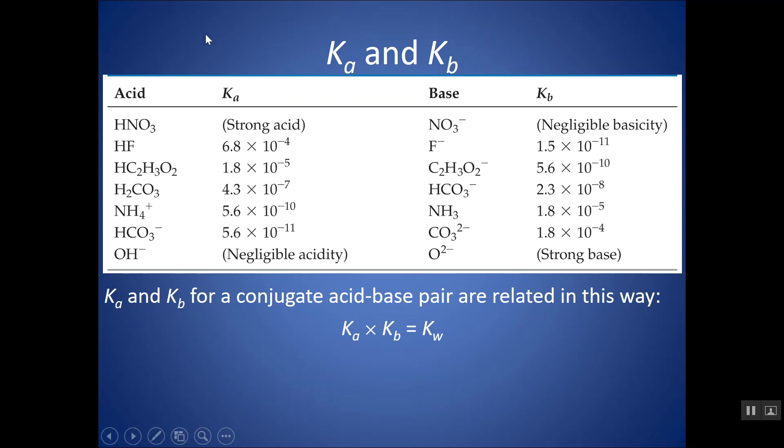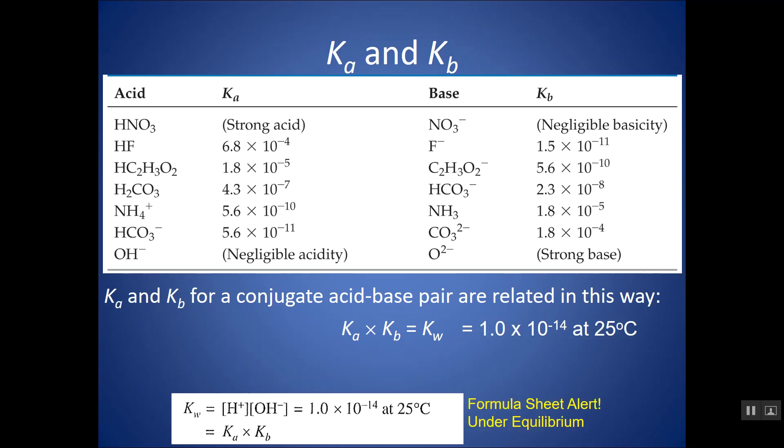You can always look up, if you have a textbook, they list Ka's and Kb's. How are these related to each other for an acid-base pair? Well, Ka times Kb for an acid-base pair always equals Kw. And what is Kw at 25 degrees Celsius? It's 1 times 10 to the negative 14, which is in your AP chem formula sheet.